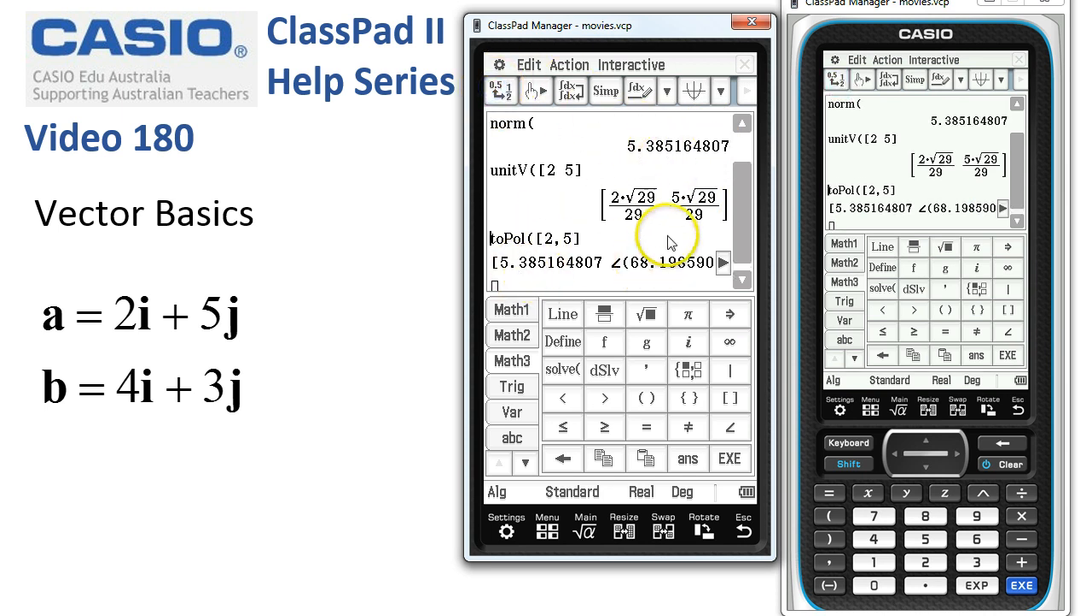Now for any function that involves more than one vector, such as finding the angle between a couple of vectors or the dot product, then we separate our vectors with a comma. So here we go, action vector. Let's find the angle between this vector,